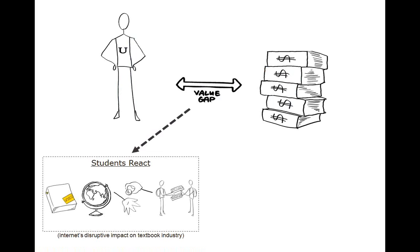So we have this value gap, and when students don't feel like they're getting the materials they want at the price they want in the format they want, they react. They respond by purchasing used books, seeking global edition textbooks from other countries at lower cost via the Internet, trading books back and forth, and there's even some illegal pirating of textbooks. That's how students are trying to get around the cost of the traditional textbook from publishers or traditional bookstores.